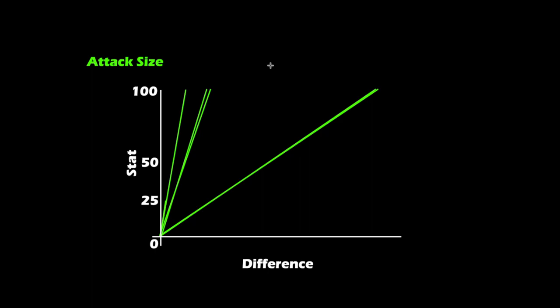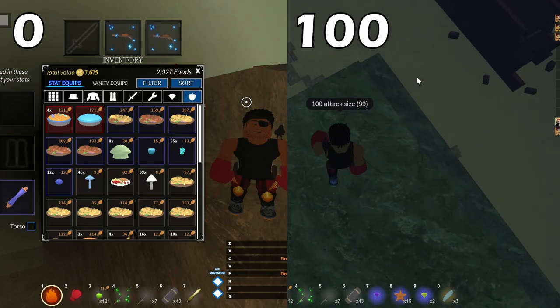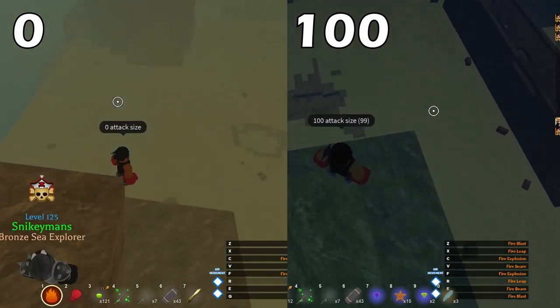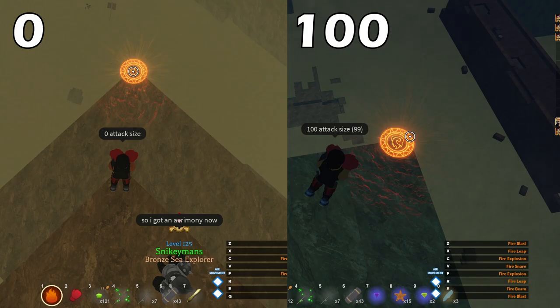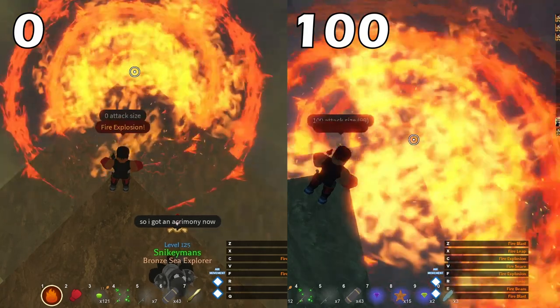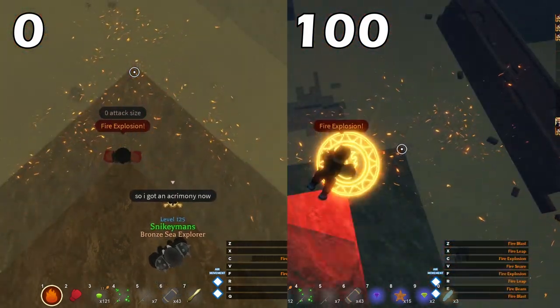Attack size is something you can take if you want, but most of the time it isn't really needed. It's a very weird stat to track. In testing with fire, the explosion side-by-side shows that 100 attack size is visibly bigger, but for blast the magic circle is only slightly larger — barely a difference.